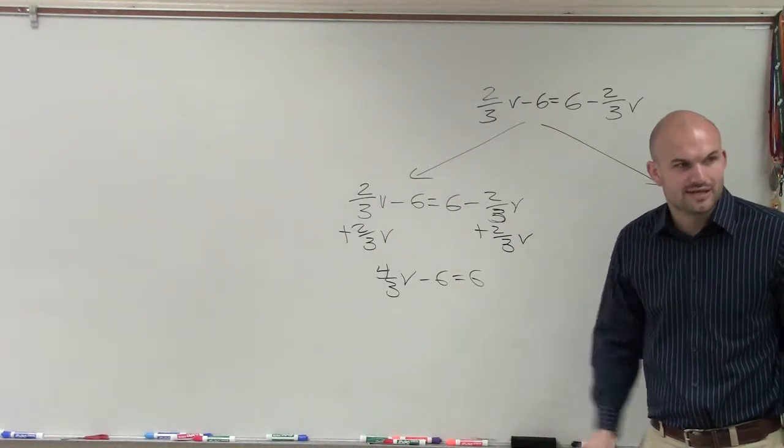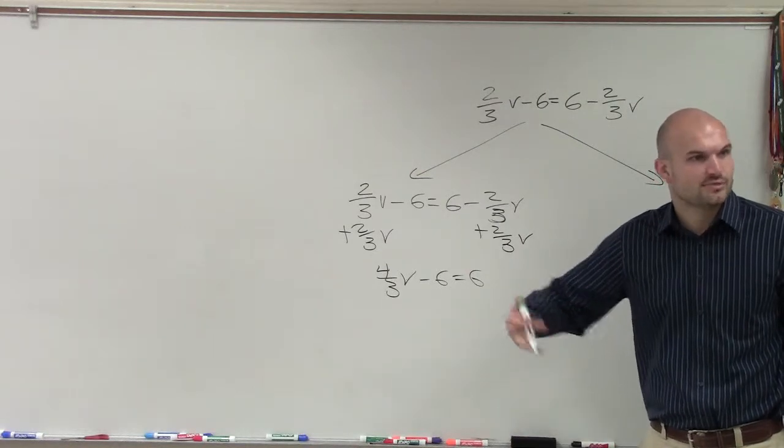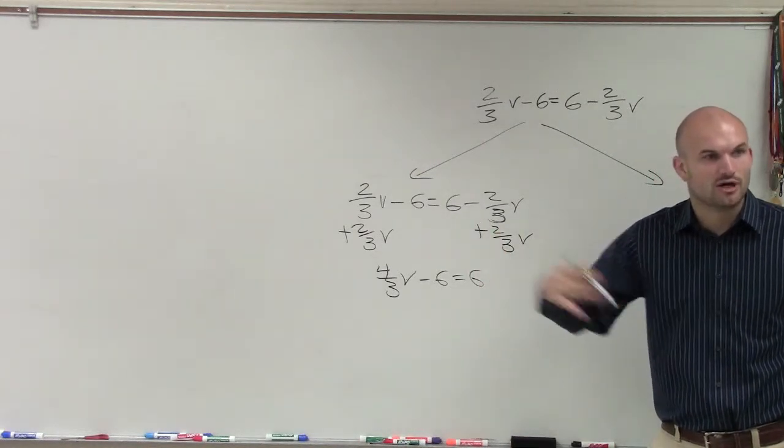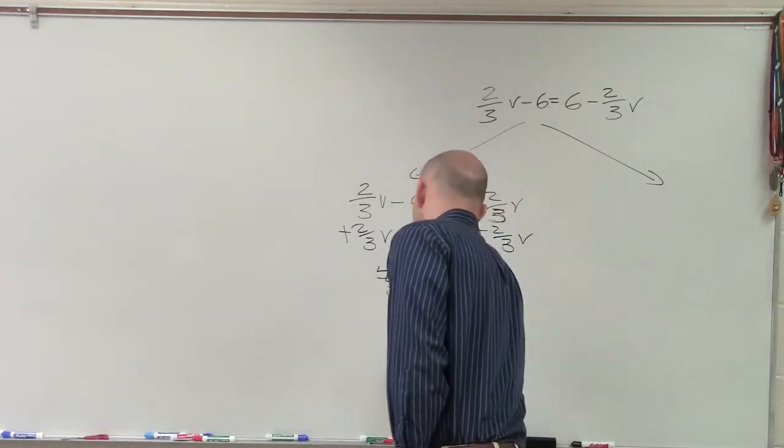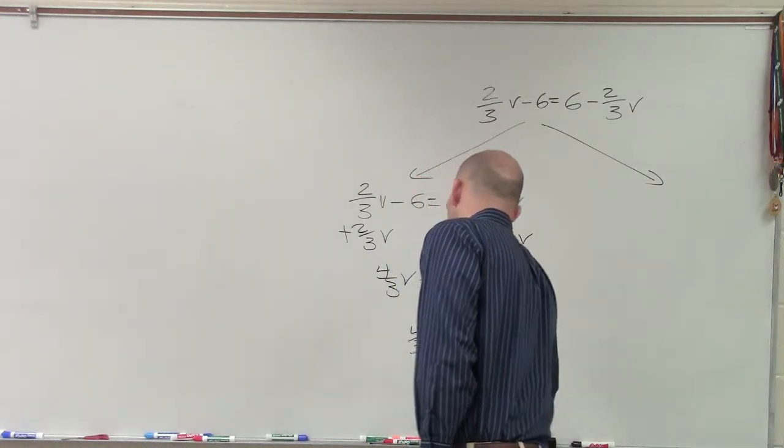What do we do with two-step equations? Undo addition and subtraction first, then undo multiplication and division. So to undo this, I add six on both sides. So I get four-thirds v equals 12.